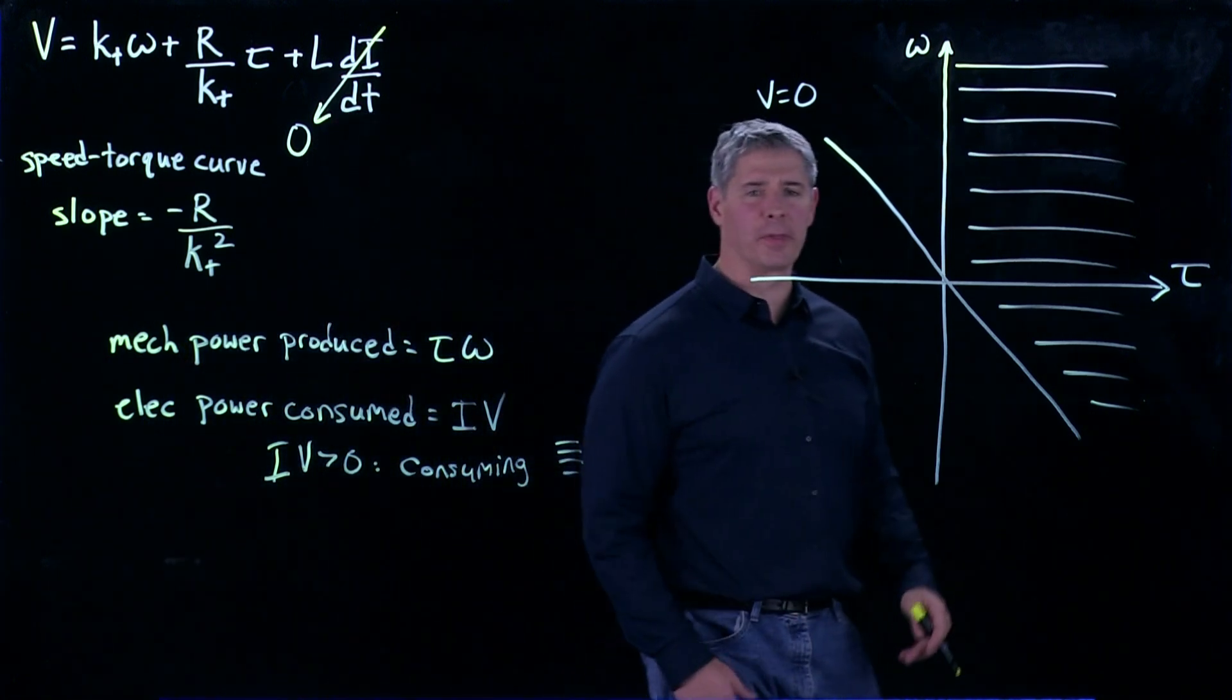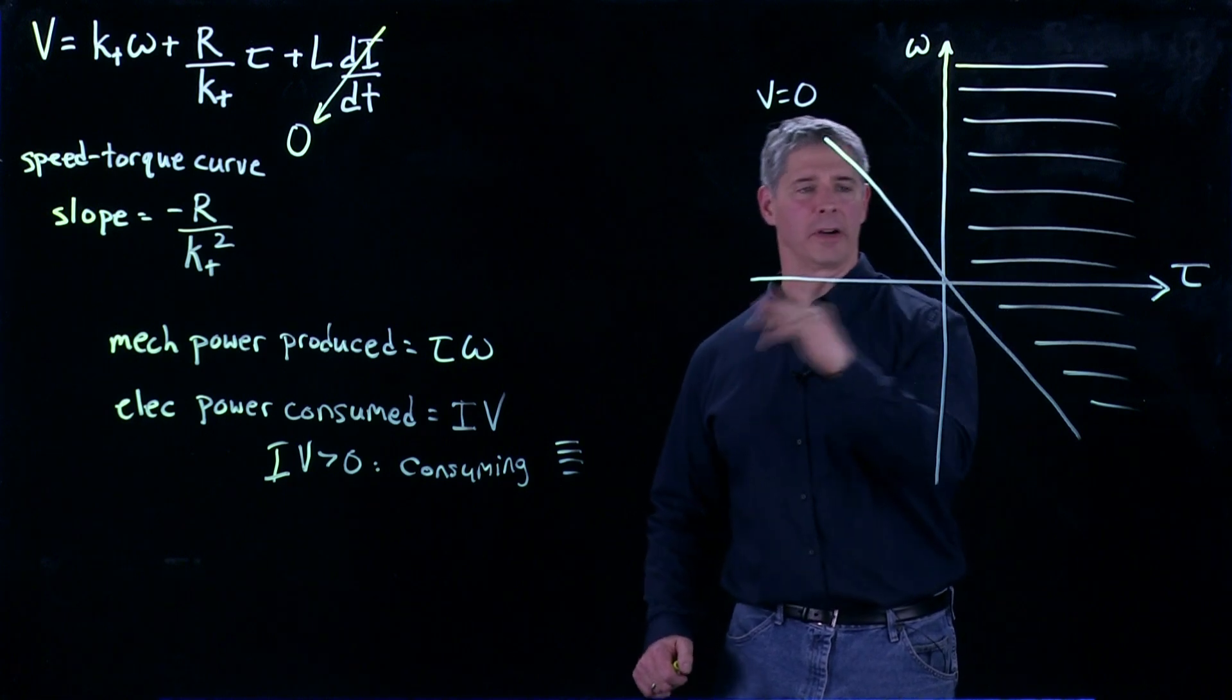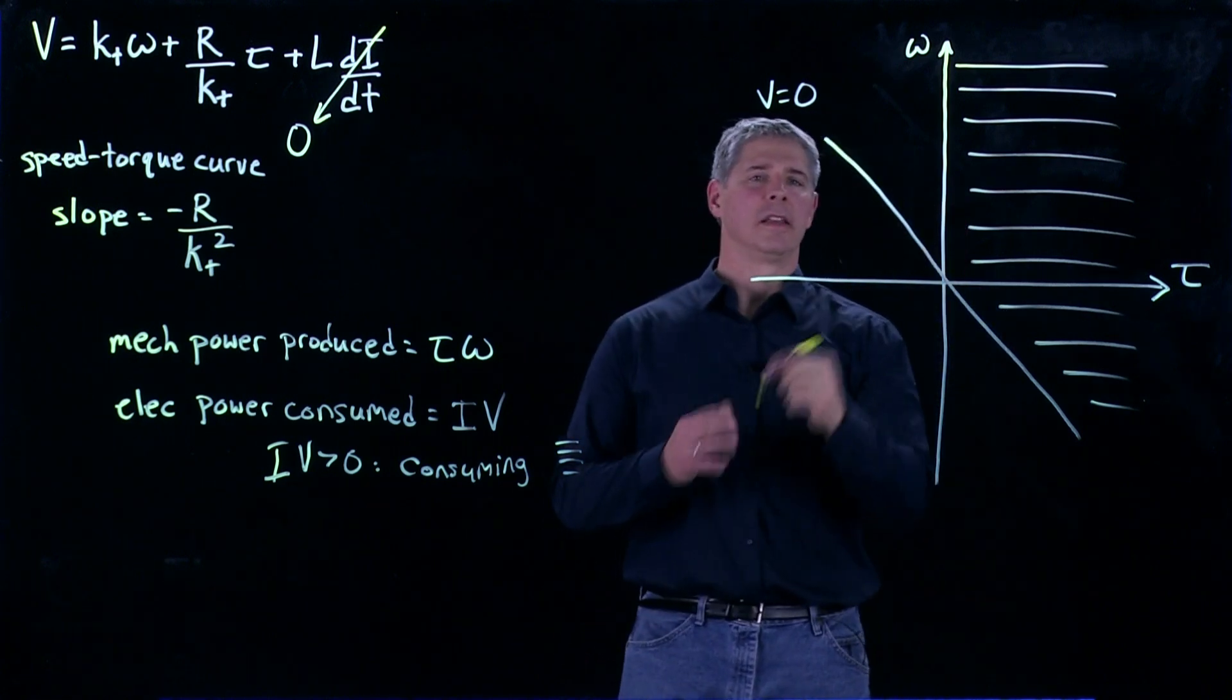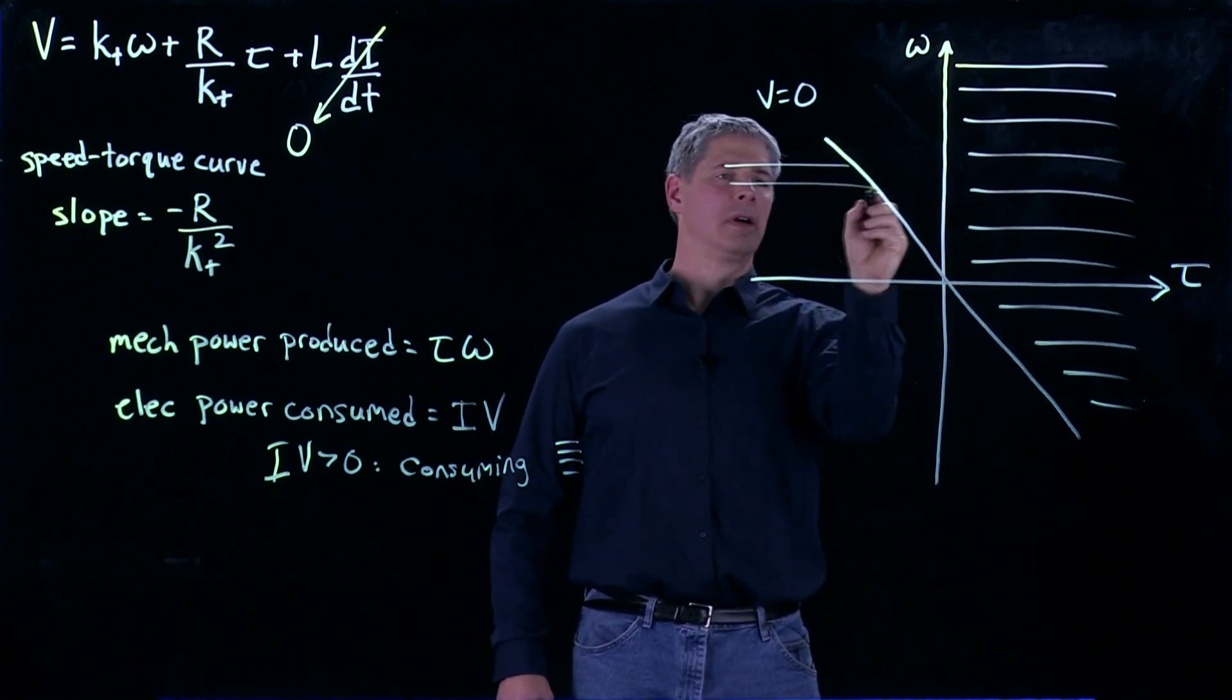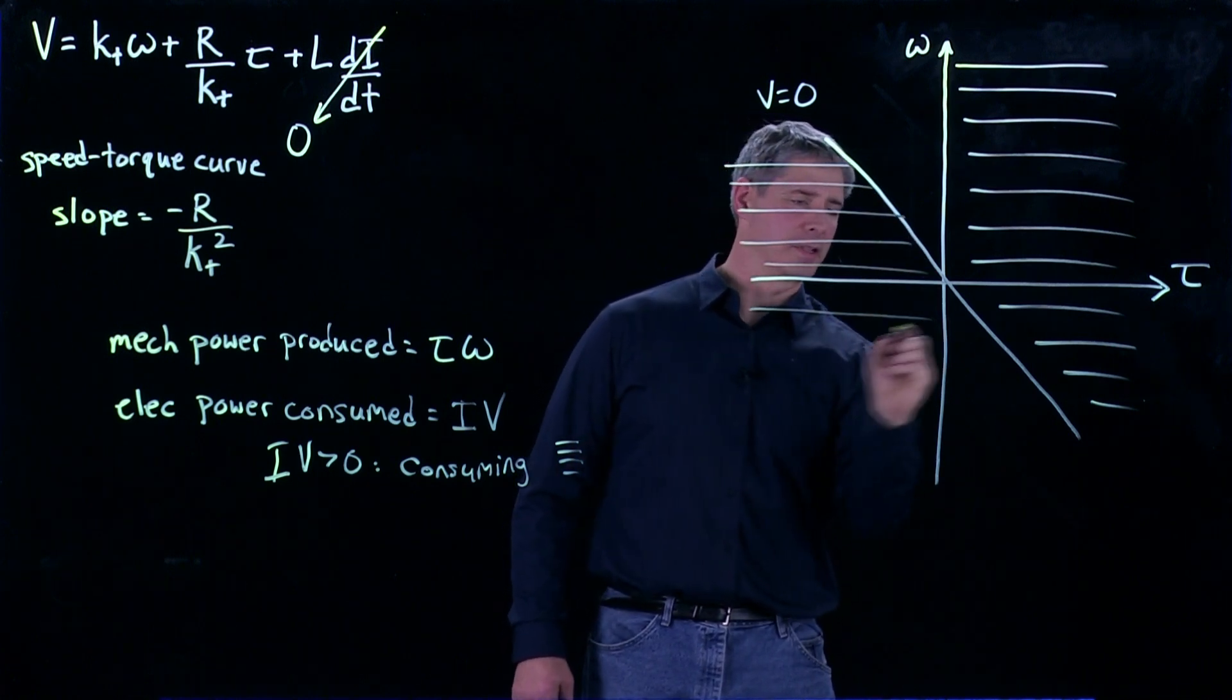And then if IV are both negative, and that's going to be where the voltage is below here and the current is on this side, then we also have a product IV that's greater than zero.